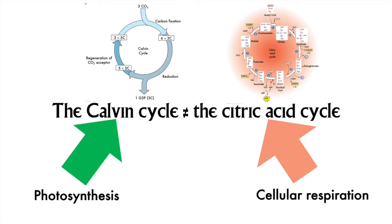You should draw out the two cycles and compare them. One is catabolic — breaking down the bonds of glucose and producing ATP — that's the citric acid one. And the other is anabolic, building up carbohydrates and consuming carbon dioxide as well as great gooey gobs of ATP and NADPH. I will ask about this on an exam, so you have been informed.